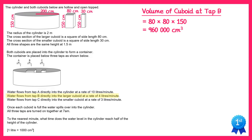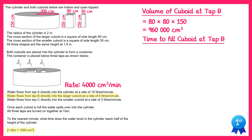We're also told that one litre is the same as 1000 centimetres cubed, so water is flowing at a rate of 4000 centimetres cubed per minute. We can use both pieces of information to find the time it takes to fill the cuboid at tap B: 960,000 divided by 4000 gives you an answer of 240 minutes.